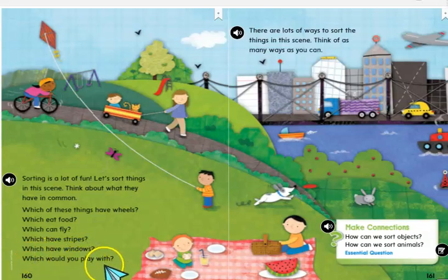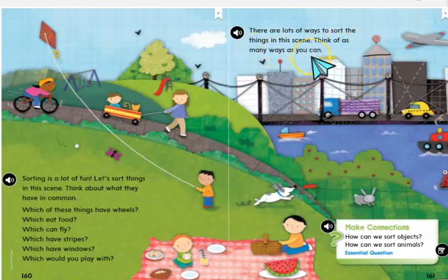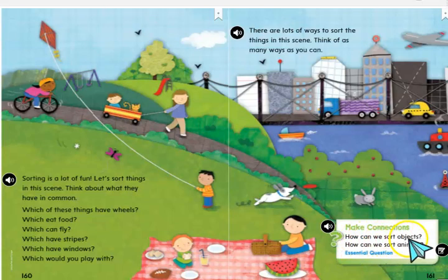Which would you play with? There are lots of ways to sort the things in this scene. Think of as many ways as you can. How can we sort objects? How can we sort animals?